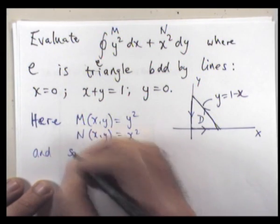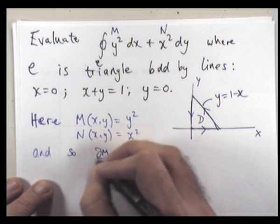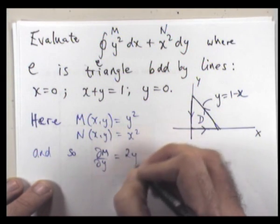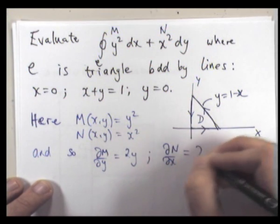Okay, so we want the following partials. We want dM/dy, that's going to be 2y, and dN/dx is going to be 2x.